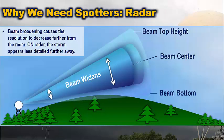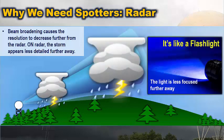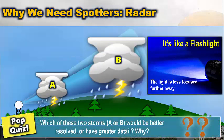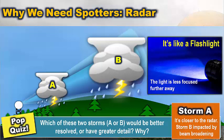Beam broadening can cause the resolution to decrease as you get further away from the radar. On radar, the storm appears less detailed further away. It's kind of like a flashlight — the light is less focused as you get further and further away. So here's a pop quiz: which of these two storms, A or B, would be better resolved or have greater detail and why? Storm A — it's closer to the radar. Storm B would be more impacted by beam broadening.